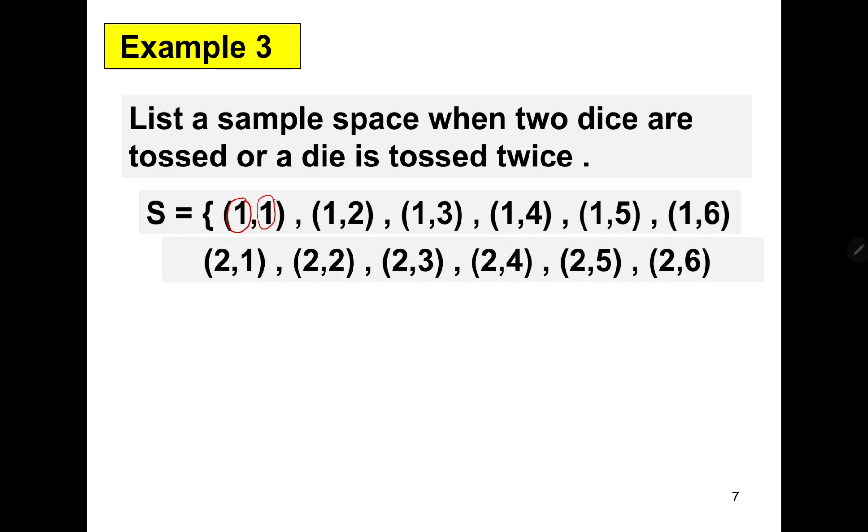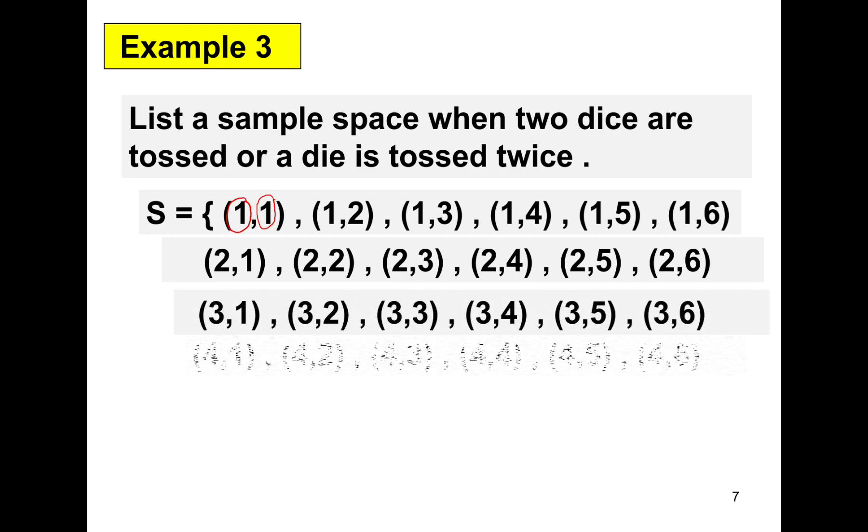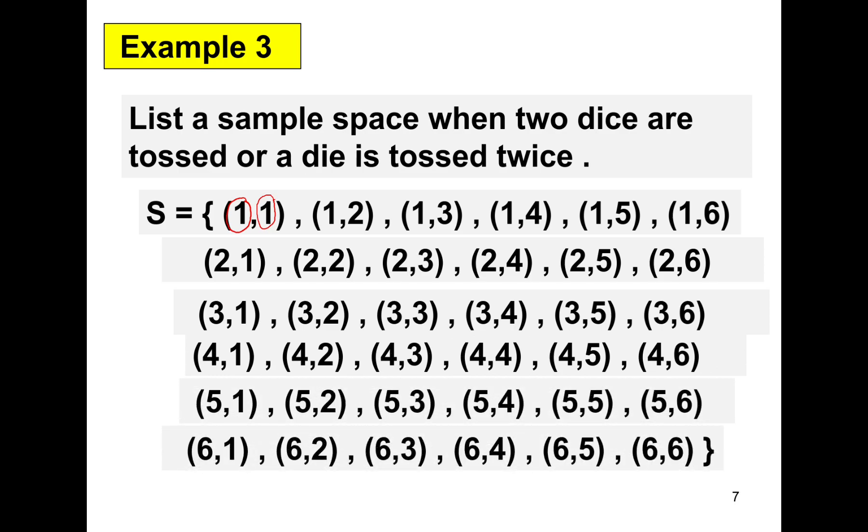So number 1 here is 1 on the first die, and number 1 here is the number on the second die. So we have (1,1), (1,2), (1,3), (1,4), (1,5), (1,6), (2,1), (2,2), (2,3), (2,4), (2,5), (2,6), and so on and so forth. Thus, the number of sample space are equal to 36.